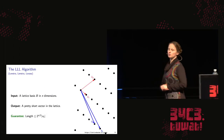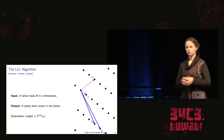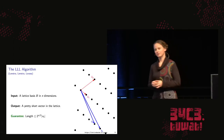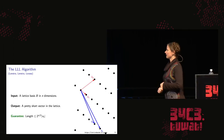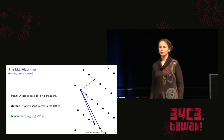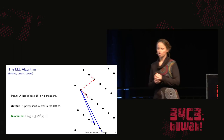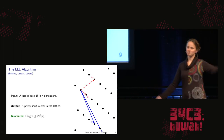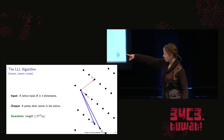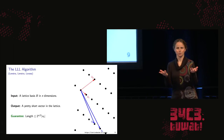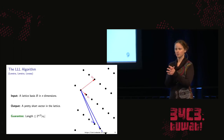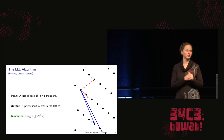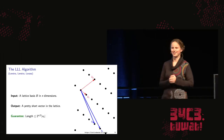The specific algorithm we'll use to compute approximate short vectors is called the LLL algorithm, named after its inventors Lenstra, Lenstra, and Lovász. The input is a lattice basis and dimension. The output is a pretty short vector — where pretty short means a length exponential in the dimension times the actual shortest vector. It's non-trivial to find and good enough for breaking a lot of cryptography.